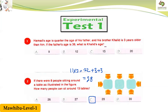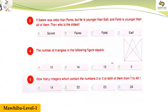Is it easy? Right, good. Now we will go to question number three. Who will do number three with me? Ward, how are you? Are you here? Yes. Okay, go ahead. Fahad, I want you to read number three, please. If Salim was older than Fares, but he is younger than Saif, and Fahad is younger than all of them — who is the oldest?